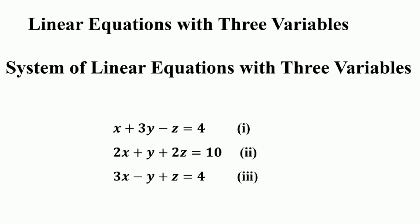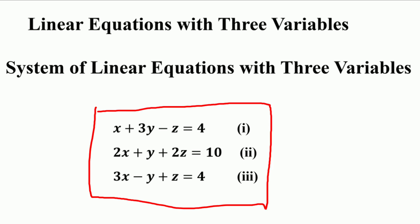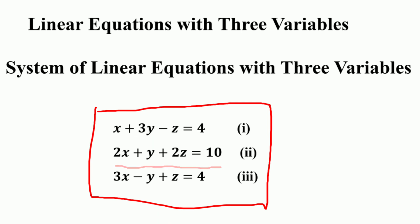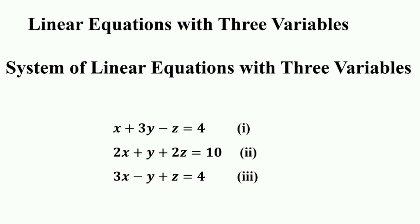If we have three linear equations with the same variables, they are called a system of equations — specifically, simultaneous linear equations or a system of linear equations with three variables. A set of linear equations in which there are the same number of equations and unknowns is called a simultaneous equation with three variables. The three equations are: 3x plus 3y minus z is equal to 4; 2x plus y plus 2z is equal to 10; and 3x minus y plus z is equal to 4. This is the system of linear equations with three unknown variables.